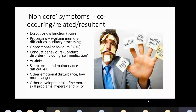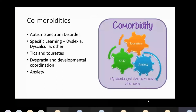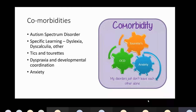Emotional disturbances, puberty — all of those things can be part of ADHD — and developmental problems, fine motor skill problems, and hyperextendability of the joints can also be part of the picture. Comorbidities are those conditions that are separate from ADHD but occur with it. The absolute classic ones: autism spectrum disorder — about 30% of children with ADHD, and conversely about 20–30% of those diagnosed with ASD also have ADHD. Specific learning difficulties such as dyslexia and dyscalculia, tics and Tourette's, dyspraxia and developmental coordination difficulties, and anxiety.